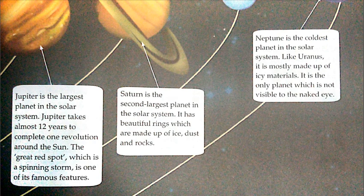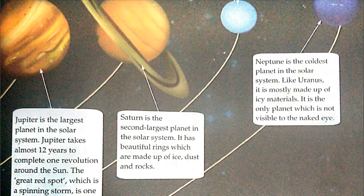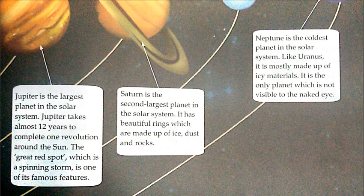Jupiter is the largest planet in the solar system. It takes almost 12 years to complete one revolution around the sun. The Great Red Spot, which is a spinning storm, is one of its famous features — telescope se dekhne par uss par ek bahut bada red spot dikhta hai jo spinning storm ko dikhata hai.